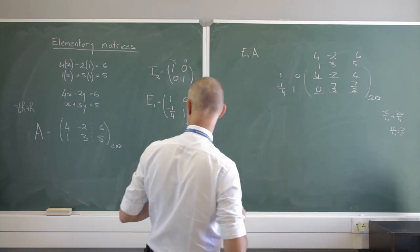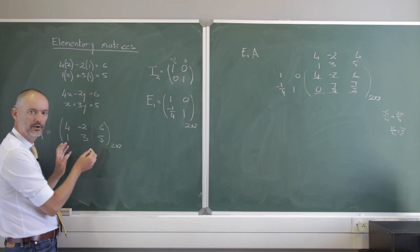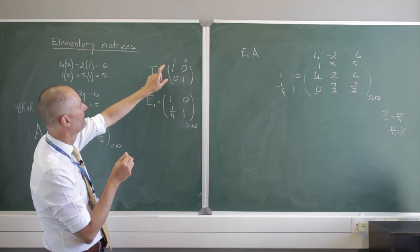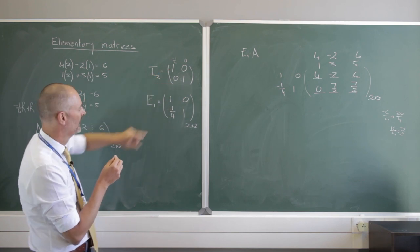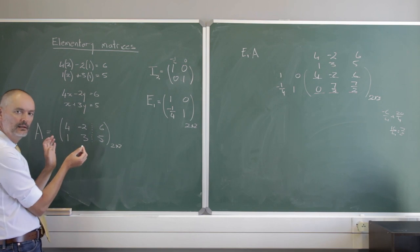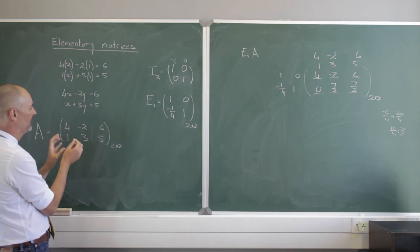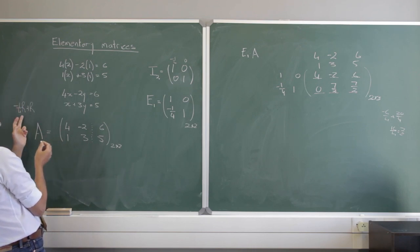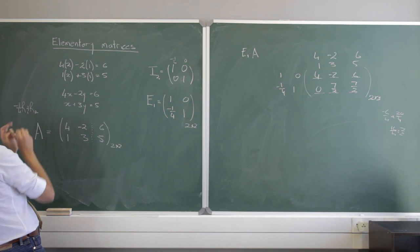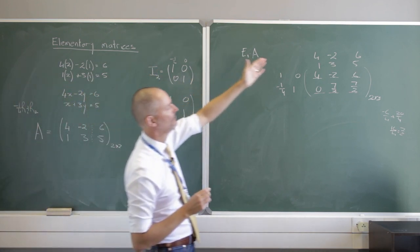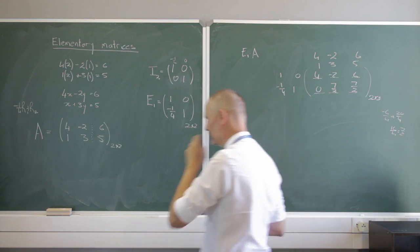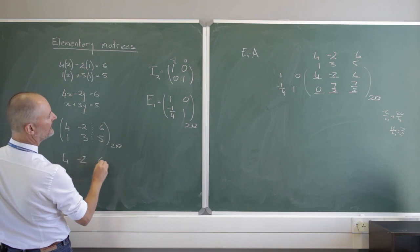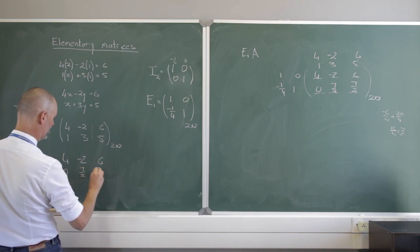That is exactly what we would have gotten doing normal row operations. What we did was create an elementary matrix from the identity matrix by doing exactly to it what we would do with Gauss-Jordan elimination — the elementary row operation minus a quarter times row 1 plus row 2. We now sit with the matrix [4, -2, 6; 0, 7/2, 7/2].